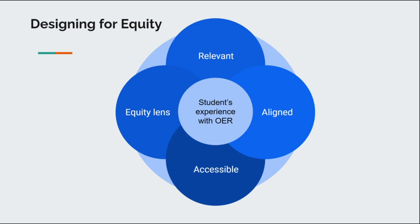The four circles represent the four components that we believe are integral to an equity-based design. The first component is that the texts and courses need to be relevant — our students show up in our texts via representation, inclusive language, Oregon-specific contexts, and open pedagogy assignments. They're also accessible, so they're usable by people with disabilities to the greatest extent possible.